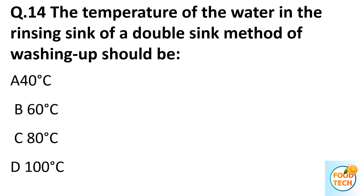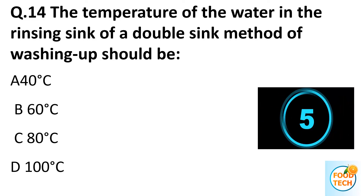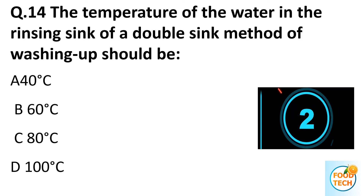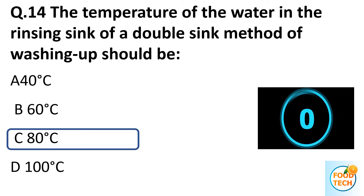Question 14. The temperature of the water in the freezing sink of the double sink method of washing up should be: A. 40 degrees Celsius. B. 60 degrees Celsius. C. 18 degrees Celsius. D. 100 degrees Celsius. Answer C. 18 degrees Celsius.